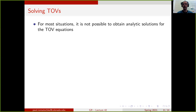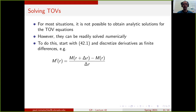It turns out that for most equations of state it is not possible to obtain analytic solutions to the TOV equations. However, one can readily solve them numerically. One starts by going back to equations 42.1 and discretizes the derivatives as finite differences — for instance, the derivative of the mass function becomes the mass at a slight displacement in radius minus the mass at the current point, divided by the displacement. The right-hand side has 4π r², which gets discretized with r evaluated at r + Δr/2. One can also use an implicit solver where the energy density is evaluated at the midpoint.